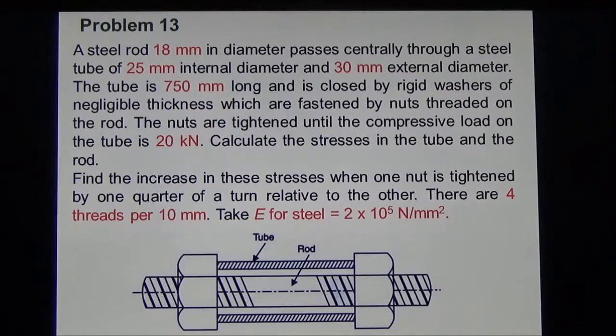The tube is 750 mm long and is closed by rigid washers of negligible thickness which are fastened by nuts threaded on the rod. The nuts are tightened until the compressive load on the tube is 20 kilo Newton. Calculate the stresses in the tube and the rod.